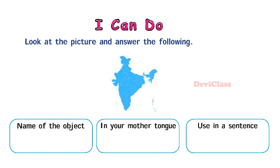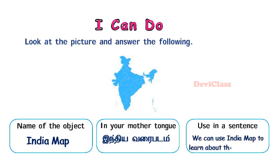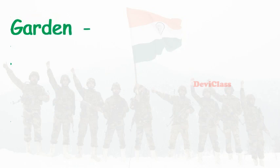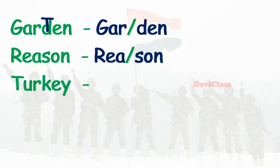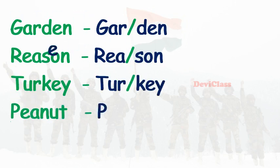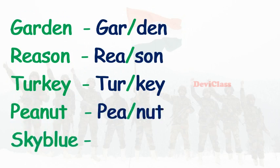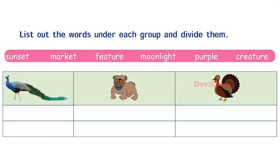I can do: look at the picture and answer — name of the object: India map. In your mother tongue: India varipadam. Use in a sentence: we can use an India map to learn about the location of its important places. Divide the following words: garden, reason, turkey, peanut, sky blue. List out the words under each group and divide them — choices: sunset, market, feature, moonlight, purple, creature. First box: creature, feature. Second column: sunset, moonlight. Third column: market, purple.